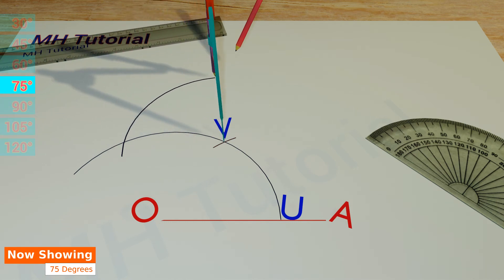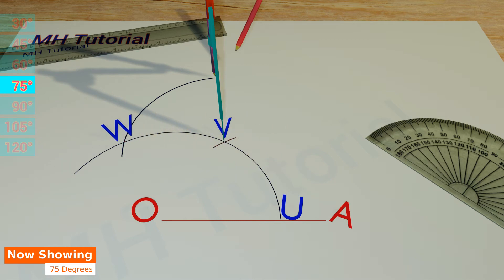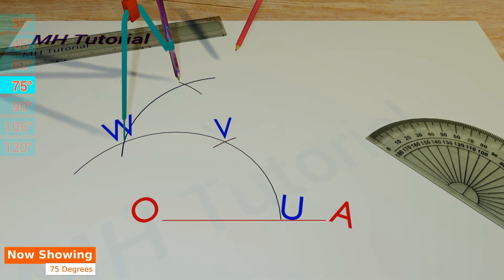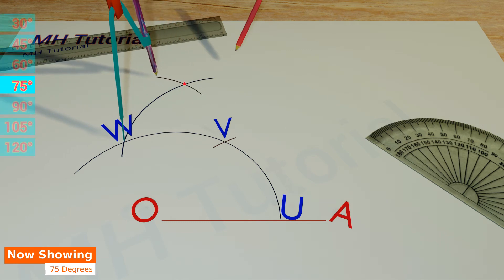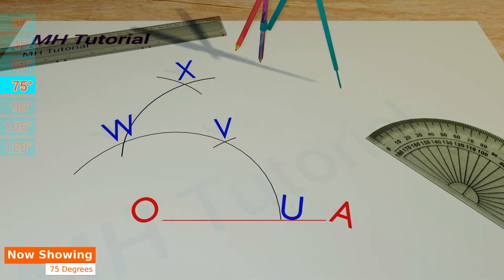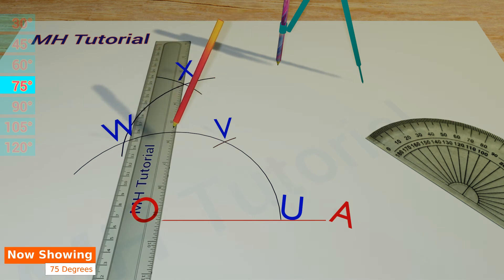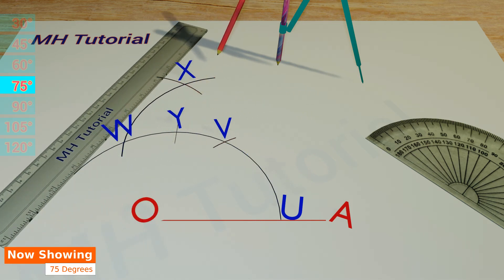This time a bigger arc has been drawn. Suppose this circle arc intersects the first one at point W. Again, placing the tip of the compass on W, another circle arc is drawn to get an intersection against the third arc. The point of intersection is X. Then align the ruler about O and X, and get a small arc across the first arc. This is point Y.